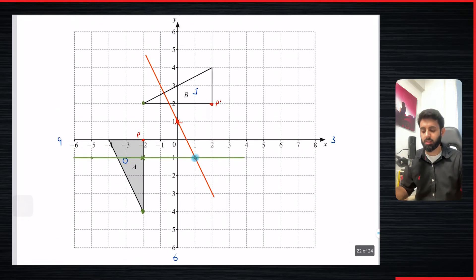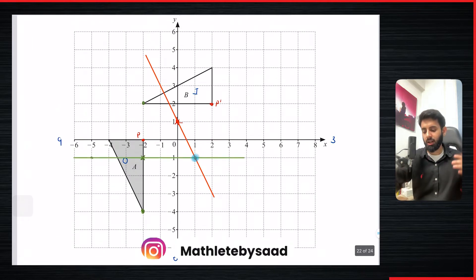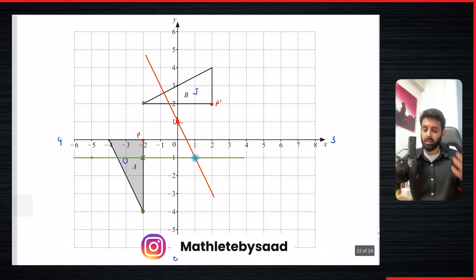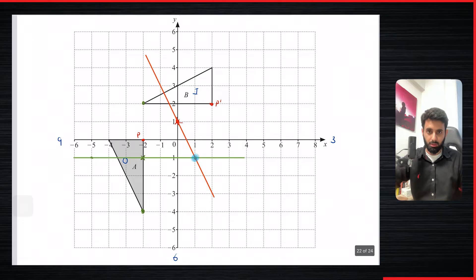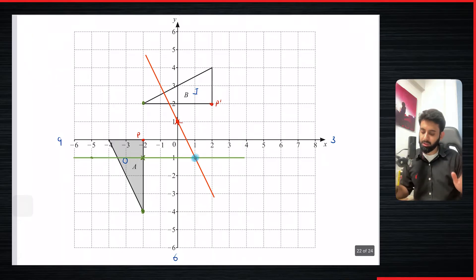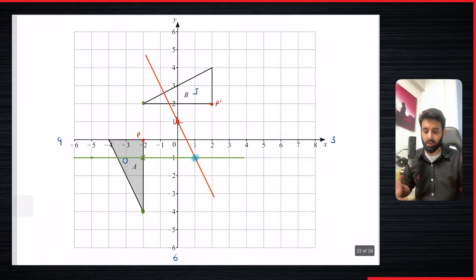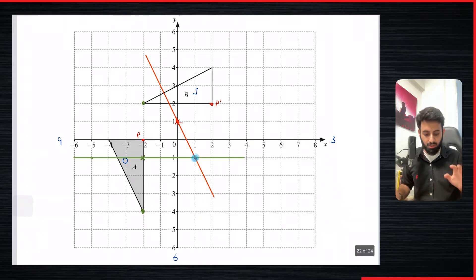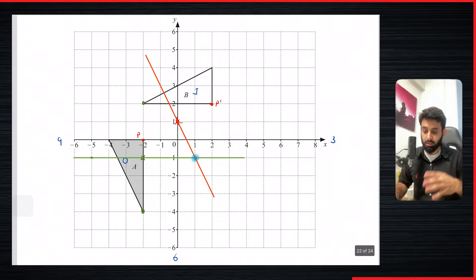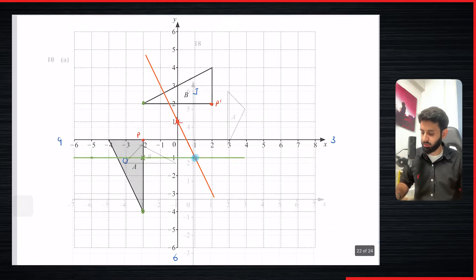And this is how you can find the center of rotation without making a mess that you would make if you were to use a ruler and a compass. Although that method is completely legit and you can use it, this method means you don't have to. I hope you've understood this question. Let's do another question and further understand how this works.